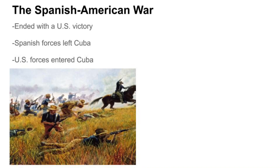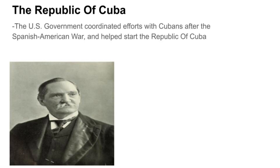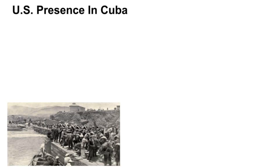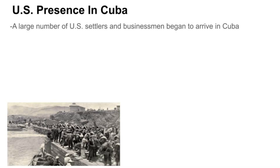Overwhelmed, the Spanish army was quickly forced out of Cuba as U.S. forces entered. Once the Spanish-American War ended with an American victory, the U.S. government coordinated efforts with Cubans and helped start the Republic of Cuba. This republic quickly established Thomas Estrada, a Cuban-born U.S. citizen, as the President of Cuba. During this transfer of power, a large number of U.S. settlers and businessmen began to arrive in Cuba.